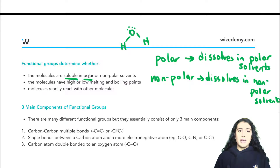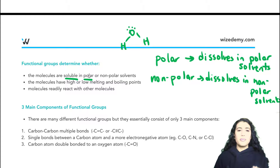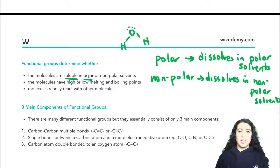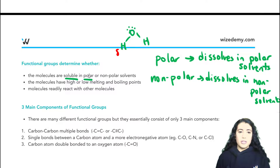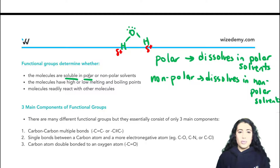When we say something is polar, it's because there's a difference in electronegativity that does not get cancelled out — so it has a dipole moment. Looking at water, the hydrogens are not very electronegative so we draw a delta plus for the hydrogens, whereas the oxygen is electronegative so we draw a delta minus there.